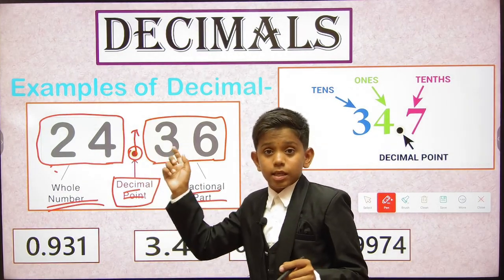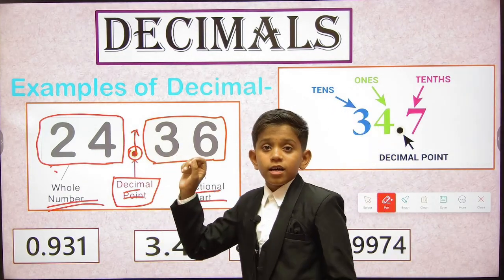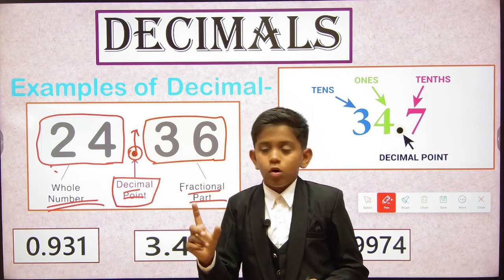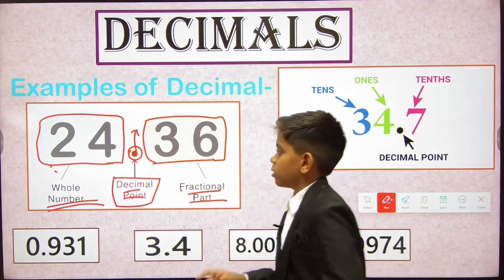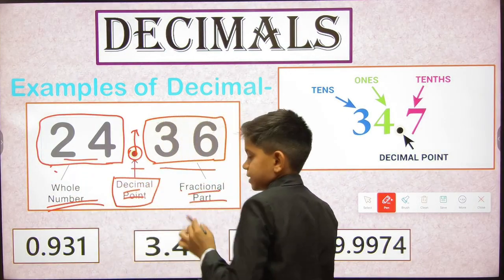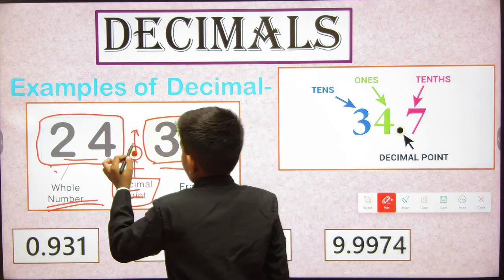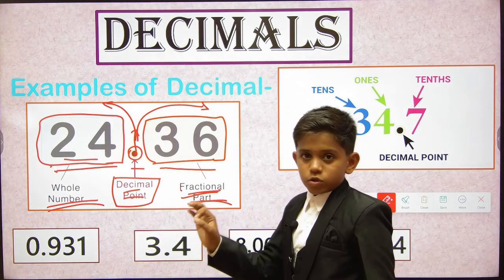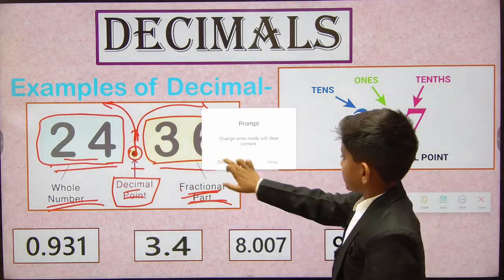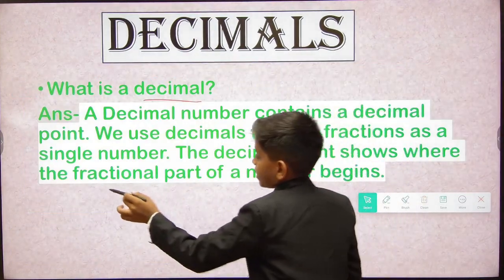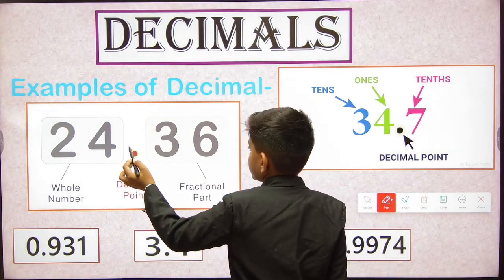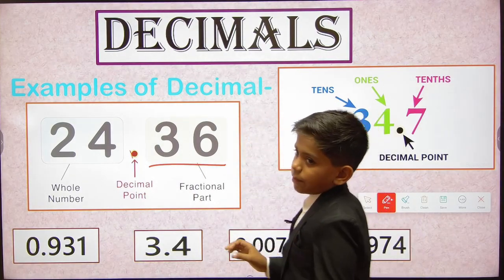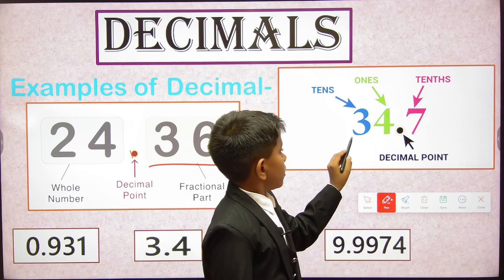The remaining '36' is called the fractional part. When reading the fractional part, we read each digit individually — not 'thirty-six' but 'three six.' So we read 24.36 as 'twenty-four point three six.' The part before the decimal point is the whole number, and the part after is the fractional part. The decimal point shows where the fractional part starts.